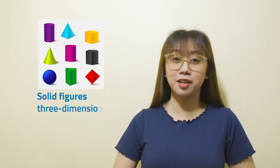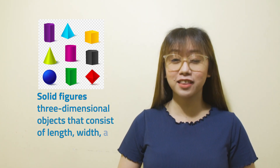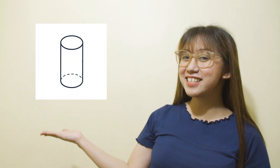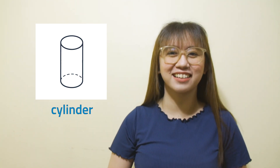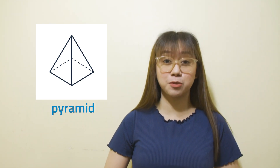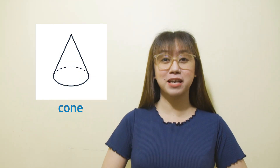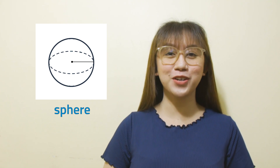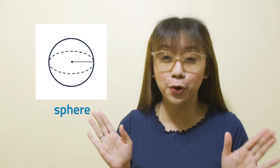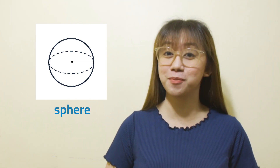Let's recall solid figures. Solid figures are three-dimensional objects that consist of length, width, and height. Here are some examples of solid figures. A cylinder has two equal circular bases that are parallel. A pyramid is a figure with a base that is a polygon and triangular sides. A cone has a circular base connected to a vertex. A sphere is a figure with a curved surface in which all points on the surface are equal distance from the center.